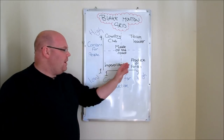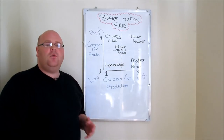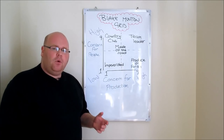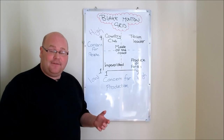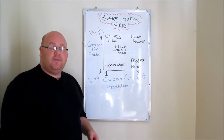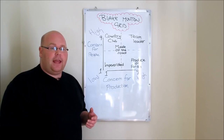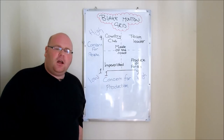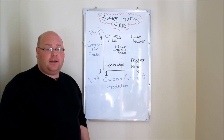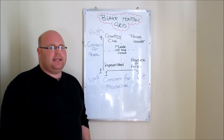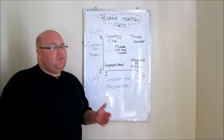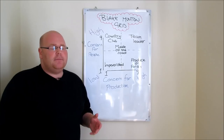Moving along the bottom of the grid, we have a second style that Blake and Mouton identified: the produce or perish style. This time there is incredible importance placed on productivity and the achievement of tasks and work for the business, but that is matched by a very low concern for the people in the team — their welfare and motivation. This style can get results and achieve the organization's objectives in the short term, ensuring productivity is high and work is getting done, though it may run into problems in the medium to longer term.